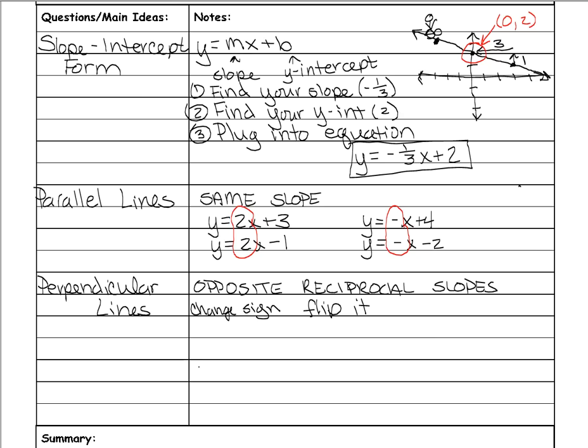Examples would be y equals 2x plus 3. But then if you take that 2, and it's positive, so opposite means we change the sign, it will become negative. And then if you flip it, remember whole numbers are always over 1, so if I flip it, it becomes 1 over 2. So my perpendicular line would be negative 1 half x, and then I'll make it plus 3. The y-intercepts don't matter for this. Only the slopes do.